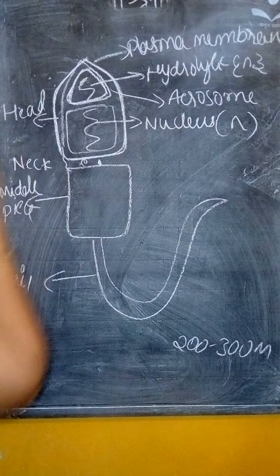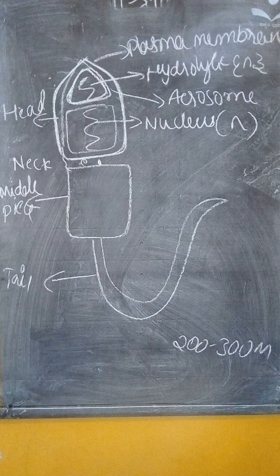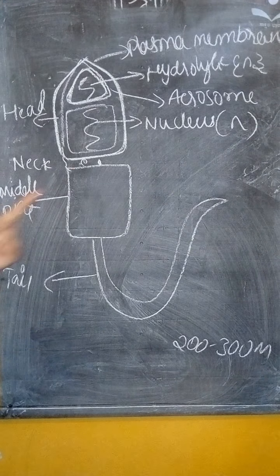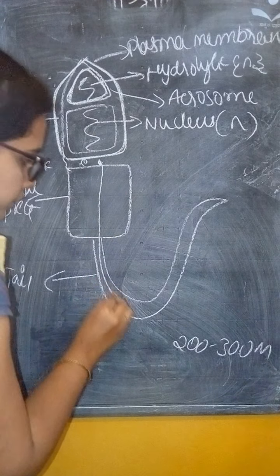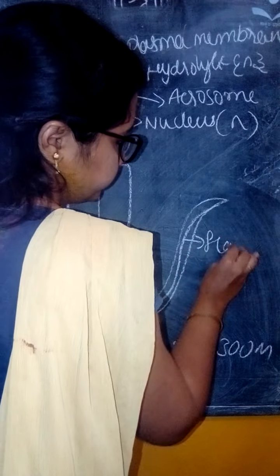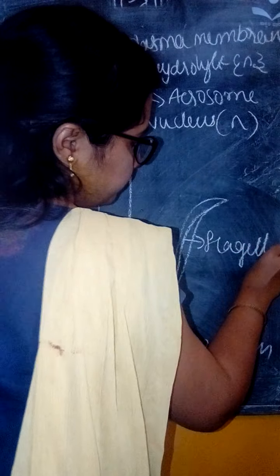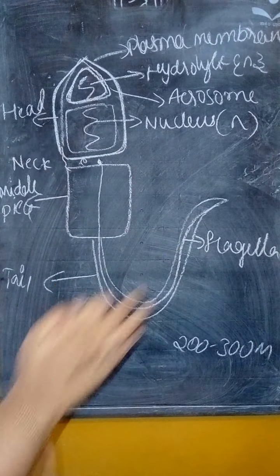Below the head is the neck. The neck runs from proximal to distal end. At the distal end, the tail is present as a flagella. Flagella helps with mobility, helping the head to move.